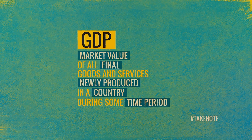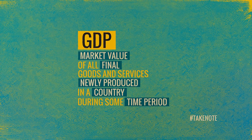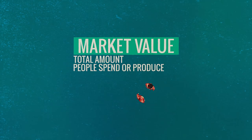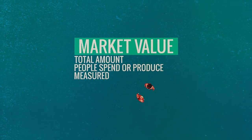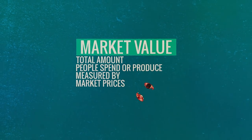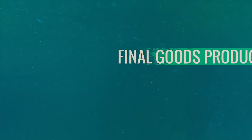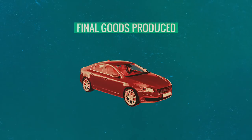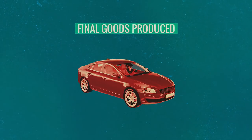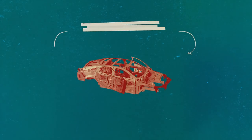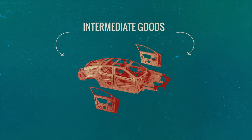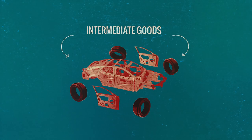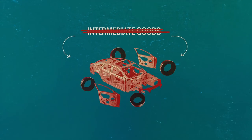The key ideas are underlined. Market value is the total amount that people spend or produce in the economy, measured by market prices. The next important word is final goods that are produced, not intermediate goods. Any kind of production process, whether it's producing cars, has intermediate goods — you need steel or aluminum. Producing tires for cars, you need rubber. Those are the intermediate goods used to produce the final goods.